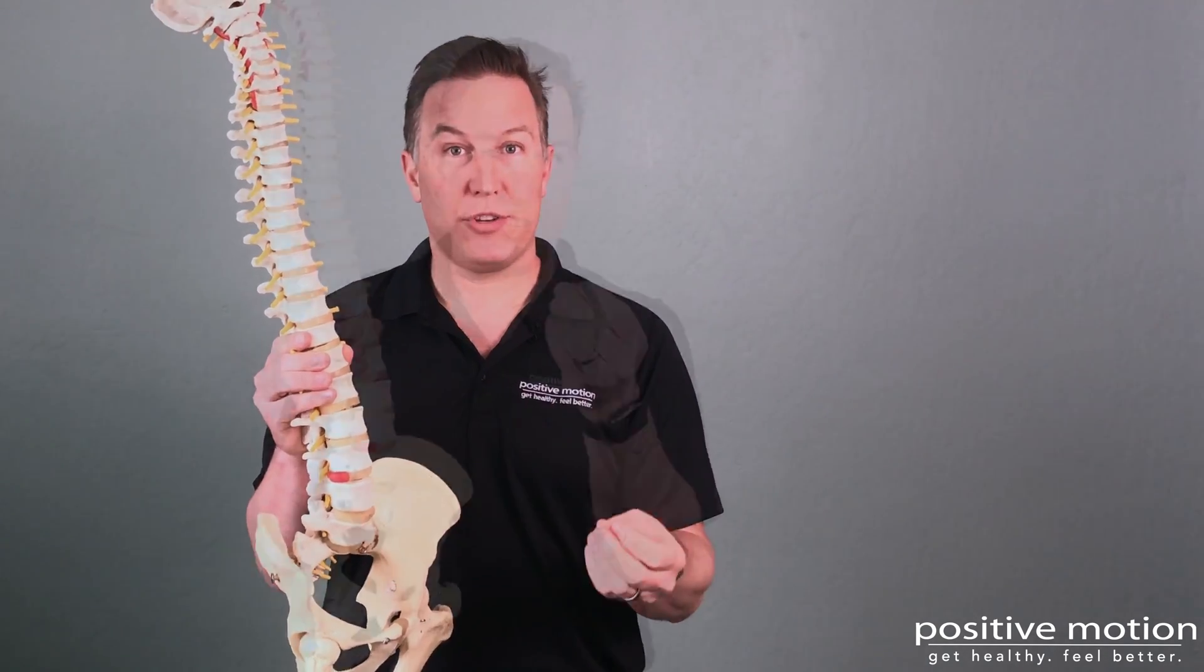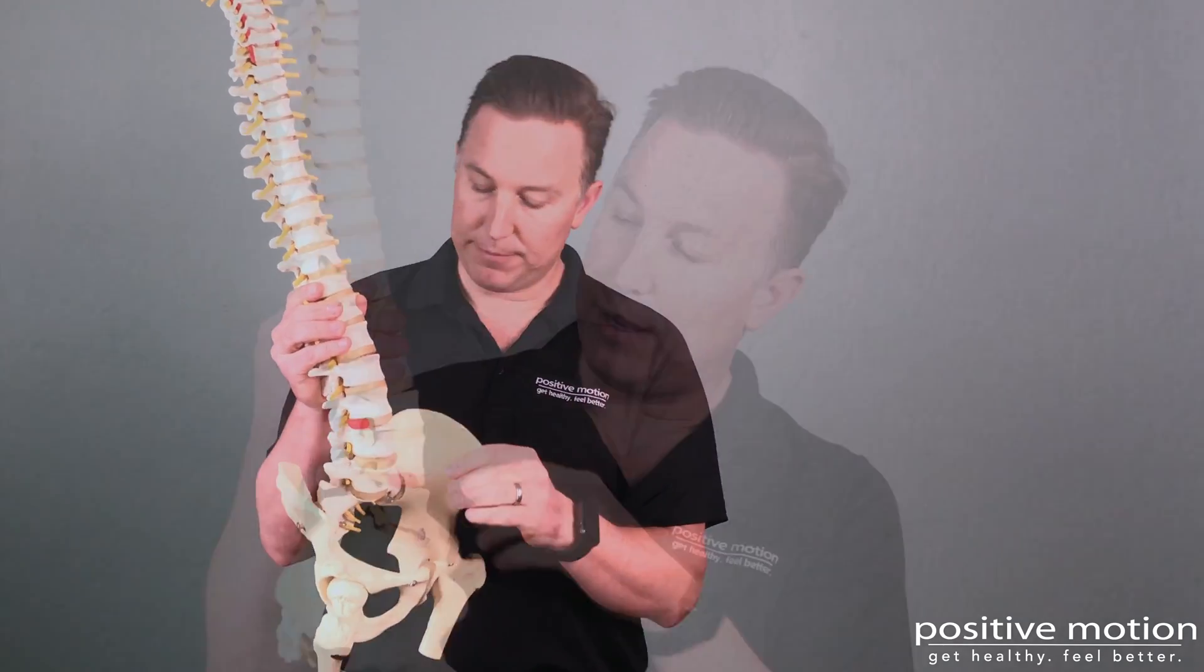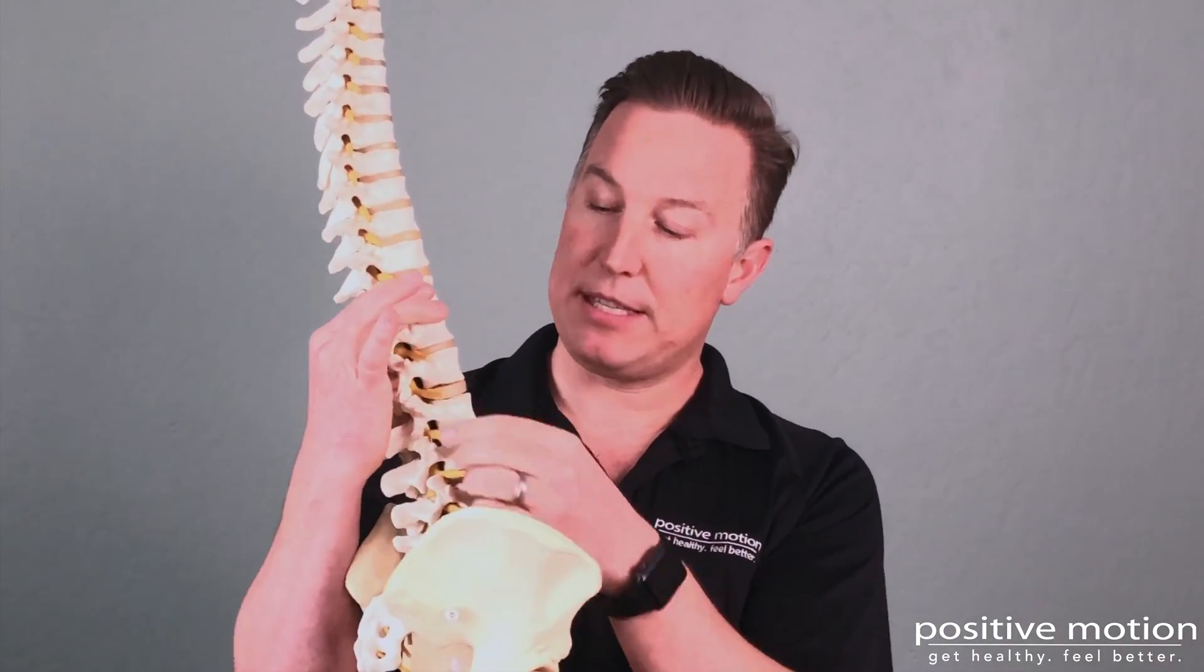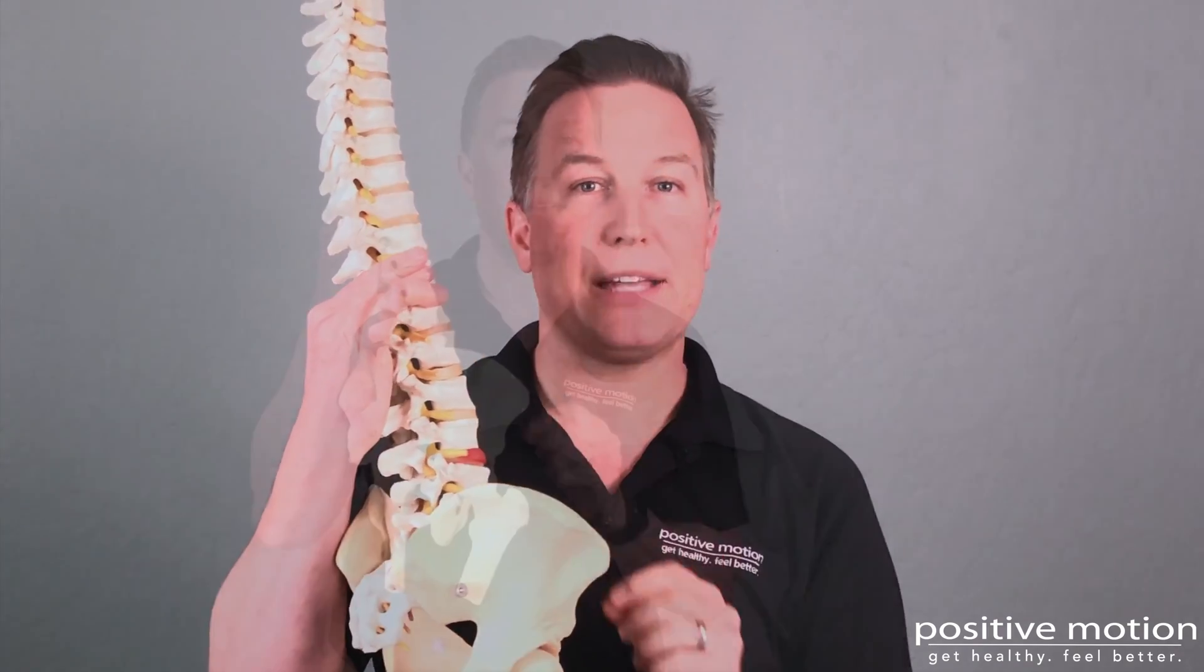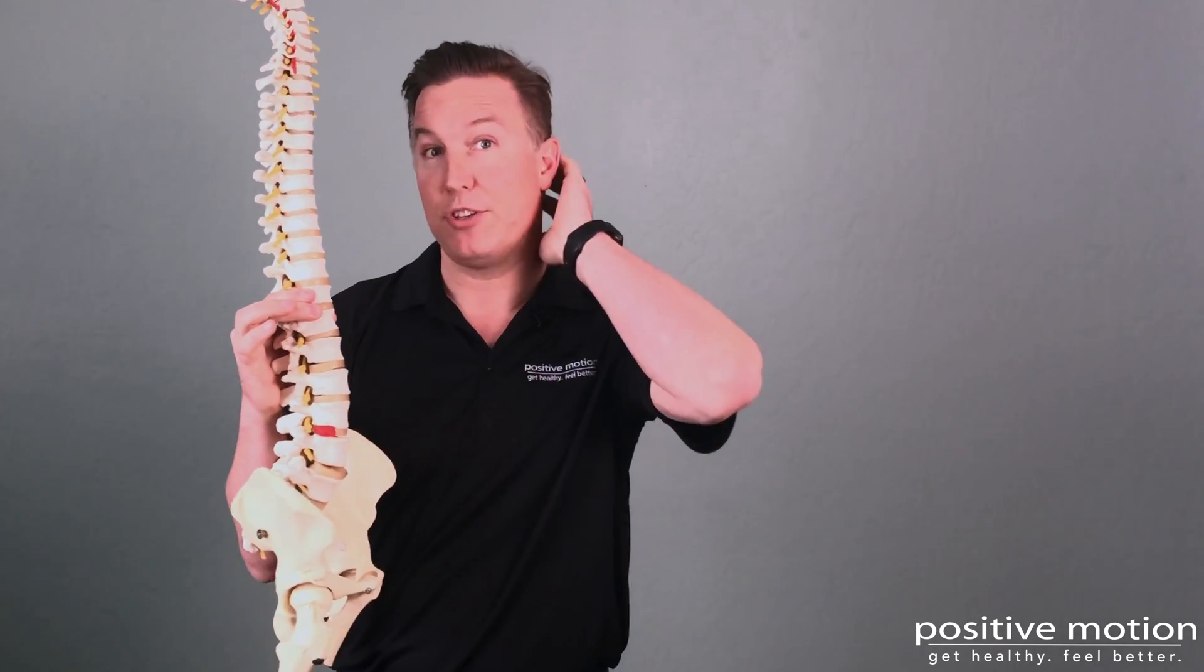When we get a disc herniation, that's that jelly kind of leaking out of the disc. And also you can notice these yellow things here. These are your spinal nerves. The nerves coming out of your lumbar spine go down into your legs. The ones coming out of your neck go into your arms. And let's talk about how we wear out our backs, wear out our discs, get them hurt.